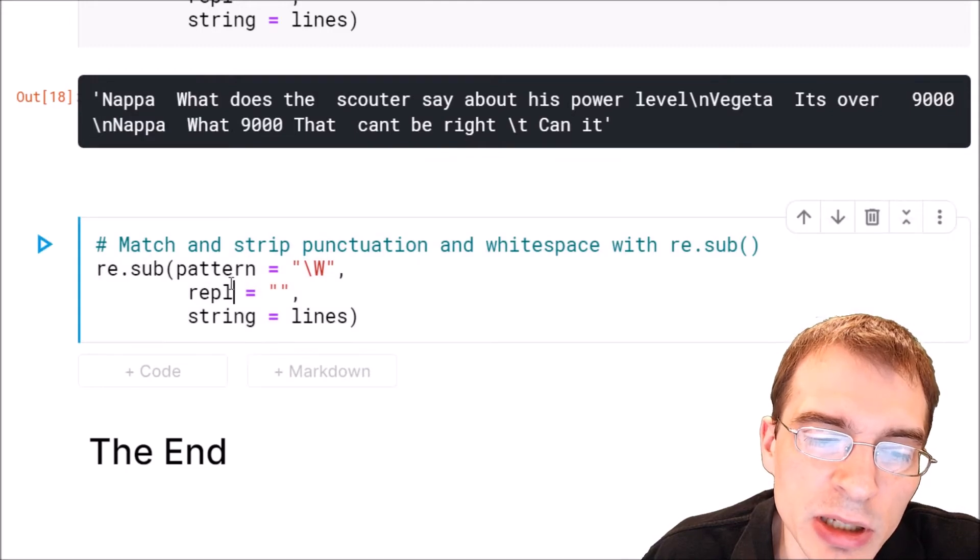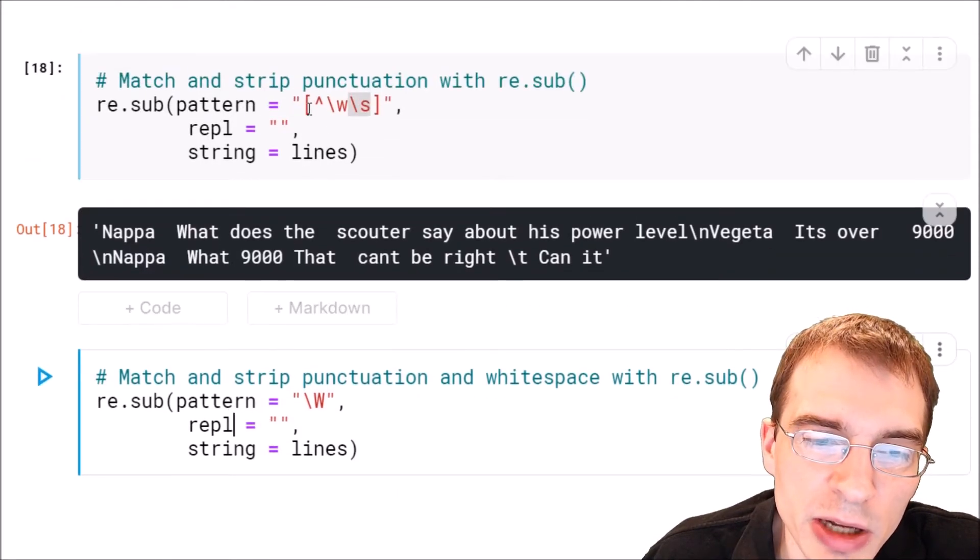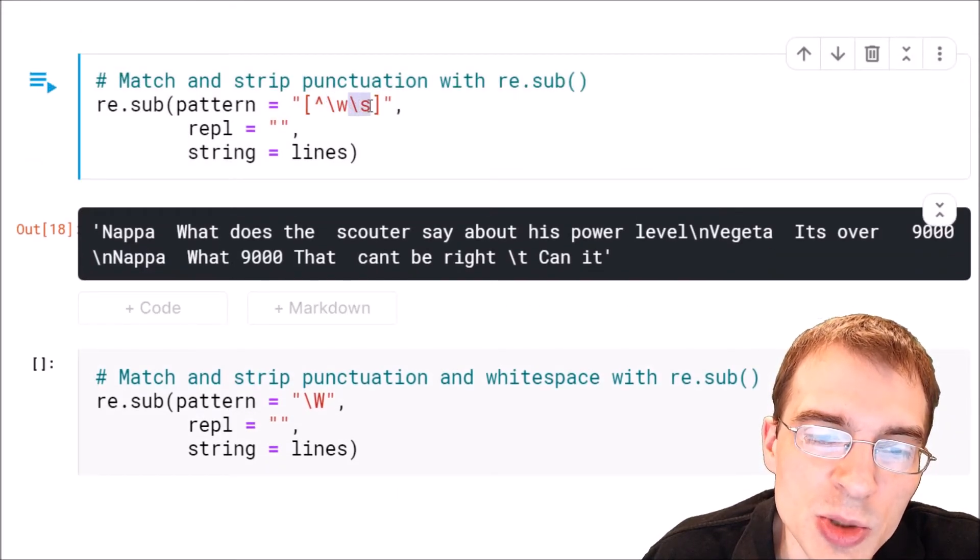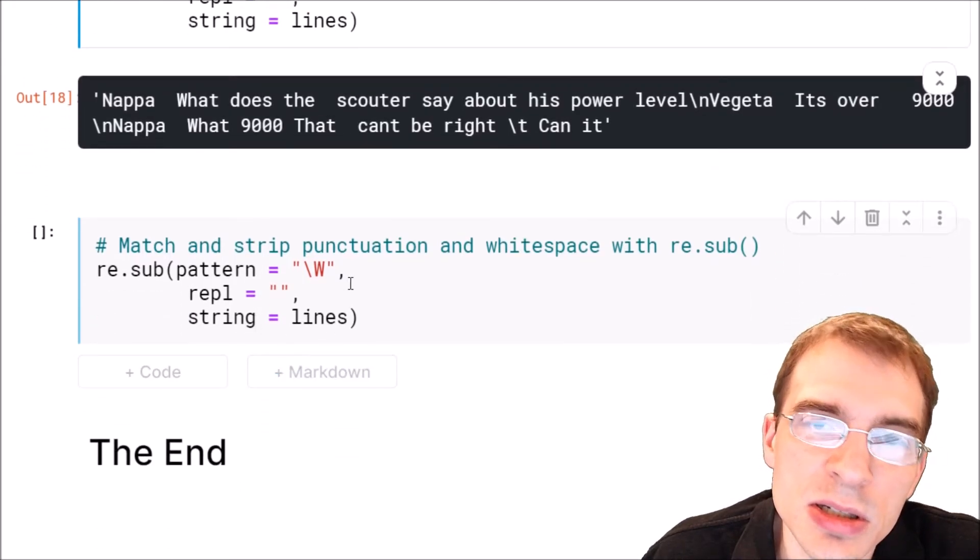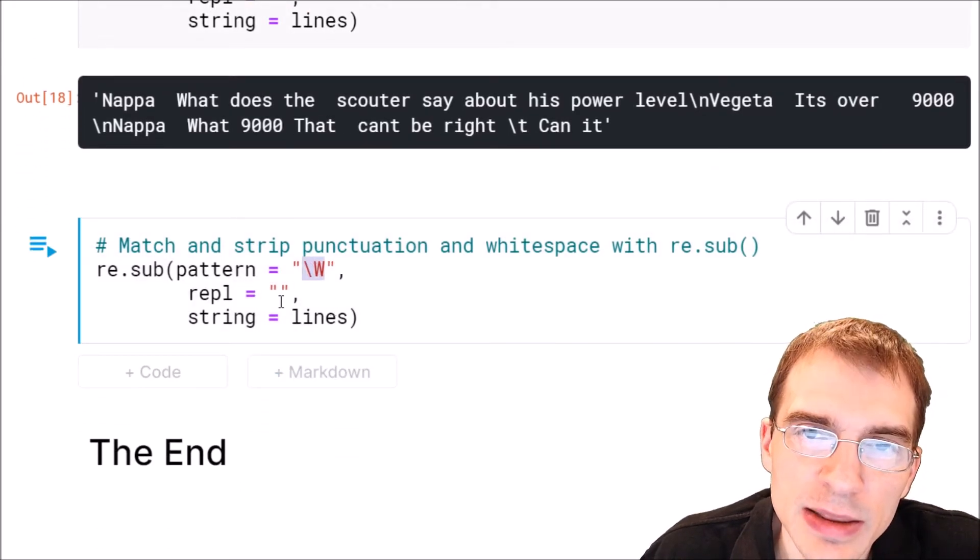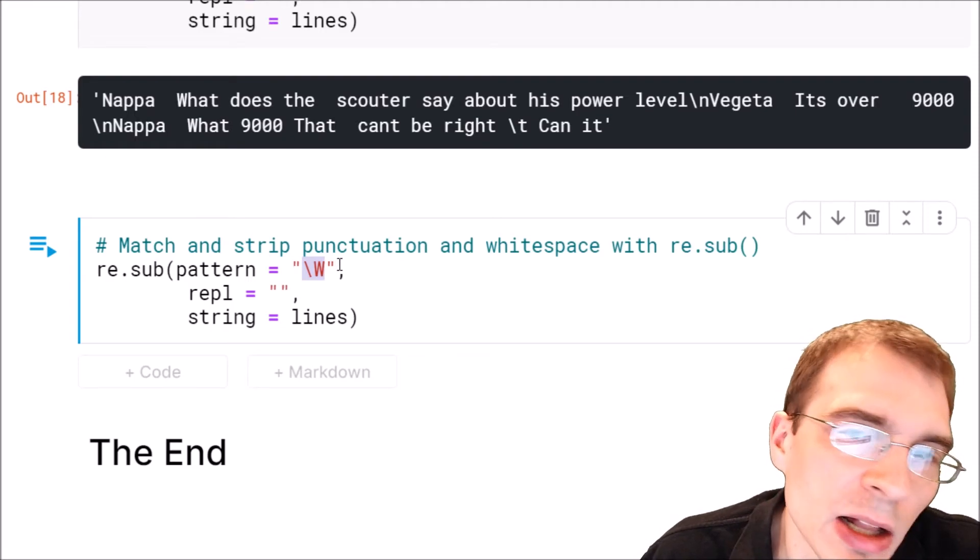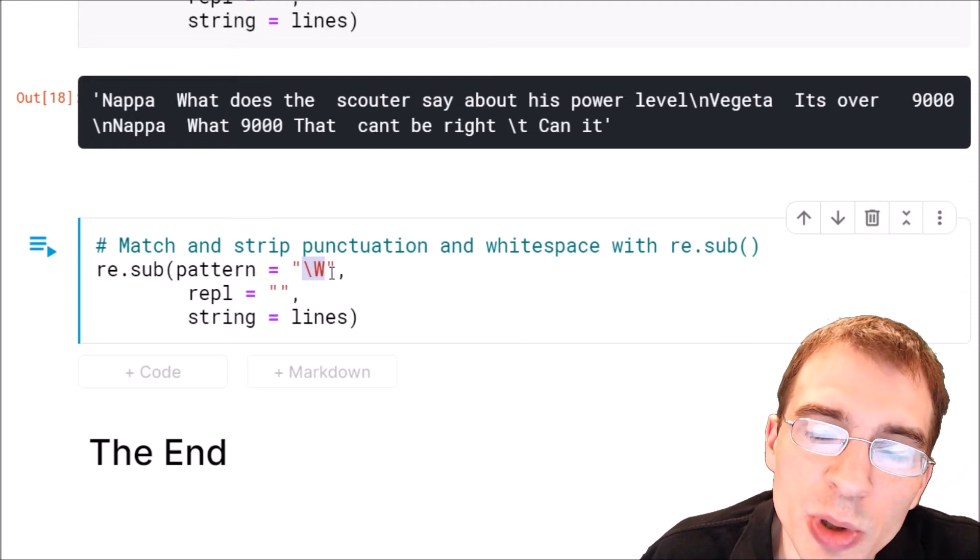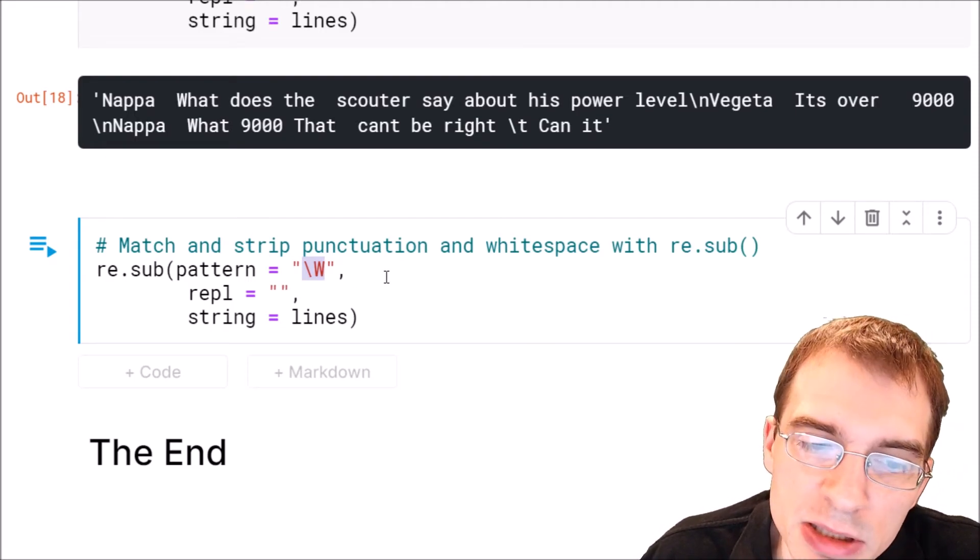We could just use re.sub again, but instead of using this pattern here, not words or spaces, we can just use this slash capital W. That's saying match anything that is not alphanumeric, so that will include both punctuation and spaces. So when we run this,